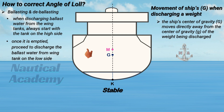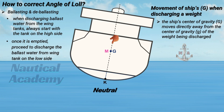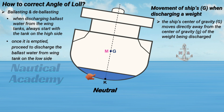What if the angle of loll still exists, but this time the angle of inclination decreases? It means that discharging ballast water from the wing tanks is effective, but not enough to lower the ship's center of gravity below the metacenter. If there are empty double bottom tanks, fill them with ballast to lower the ship's G.